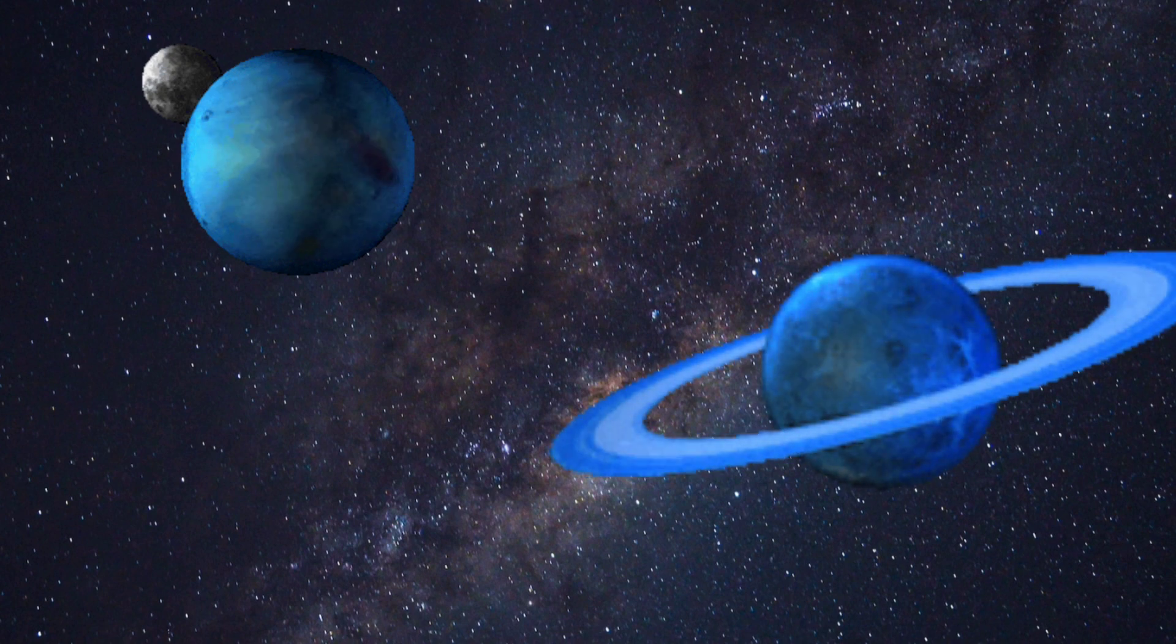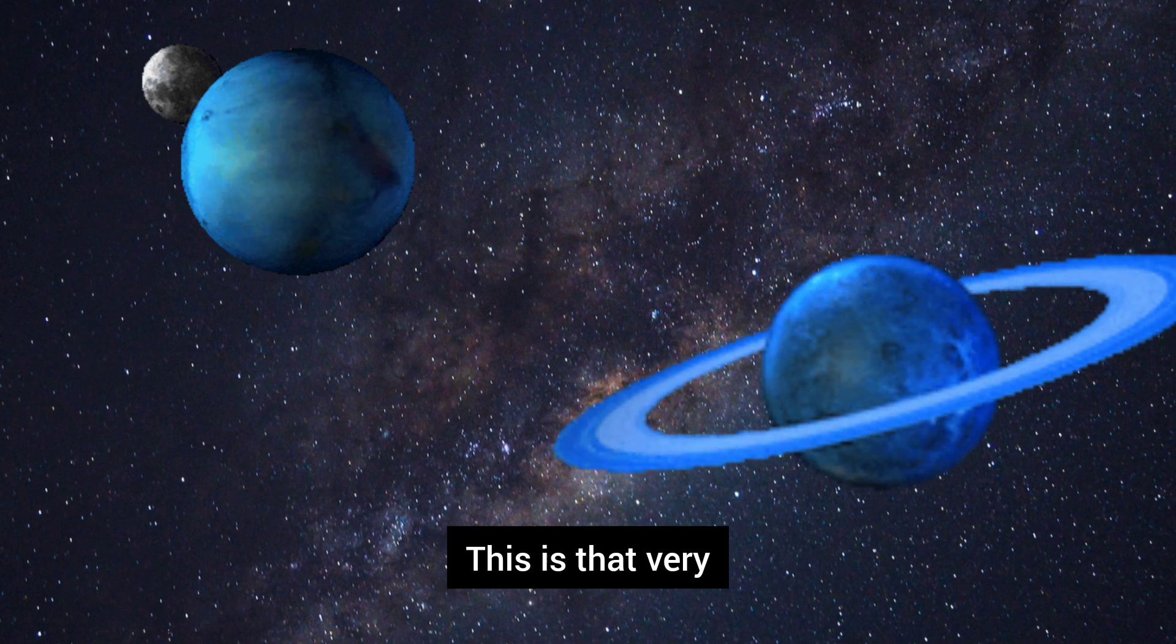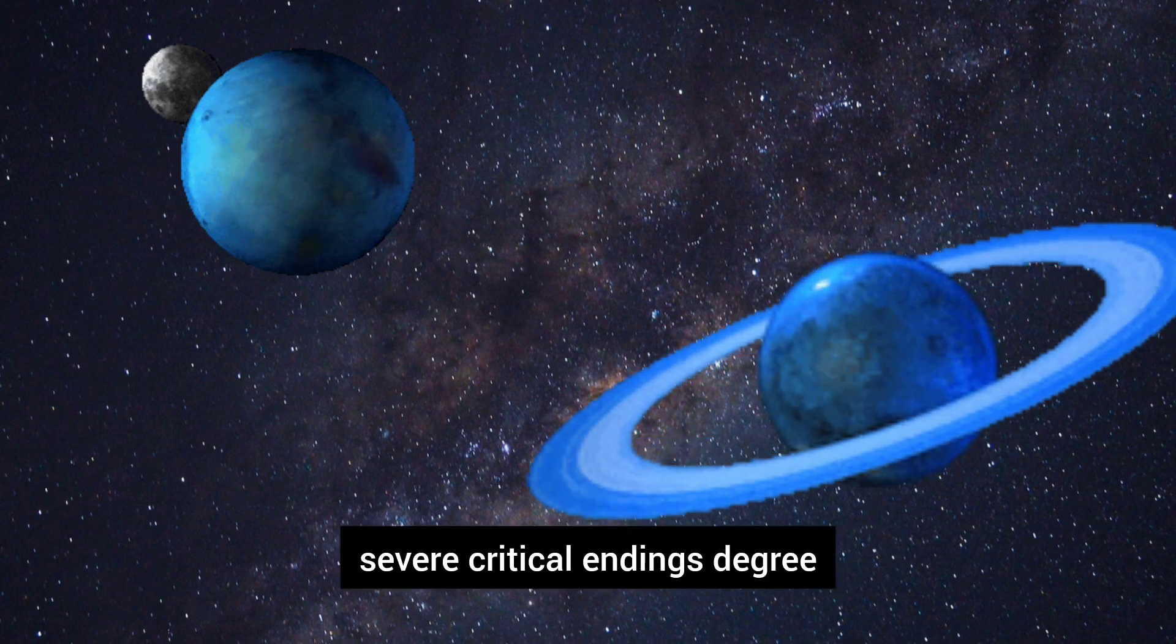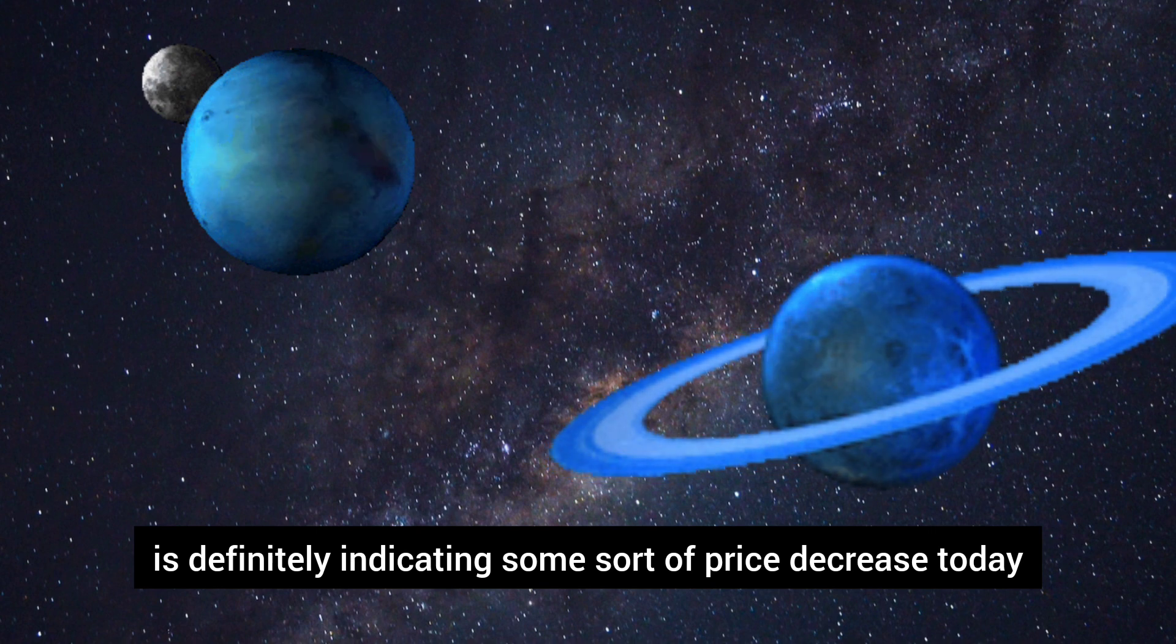These are two unpredictable planets. They could give chaos. They're at 22 degrees. This is that very severe critical endings degree. It's definitely indicating some sort of price decrease today.